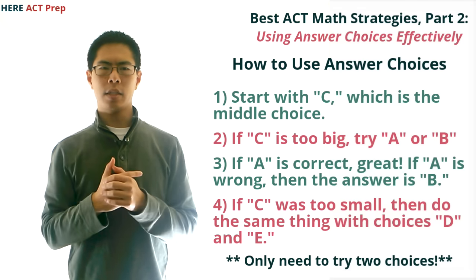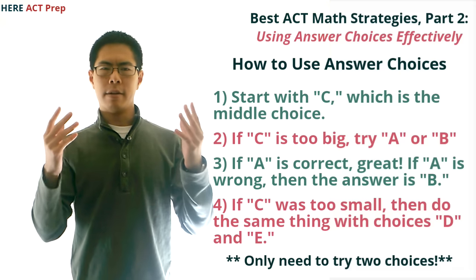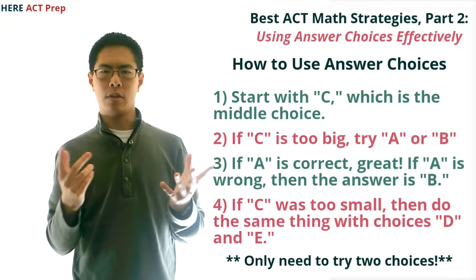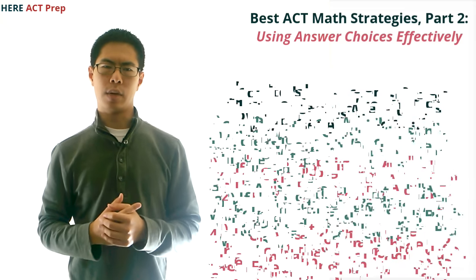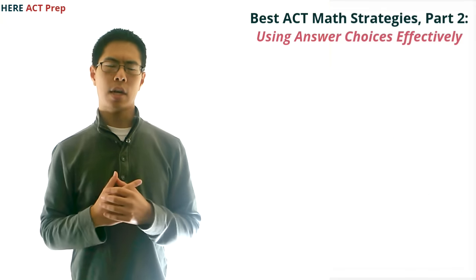On the other hand, if we just started with choice A and worked forwards, we might need to try four different choices if the answer is E, instead of just two, using this method where we start with C. Now, let's try this with two examples.